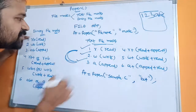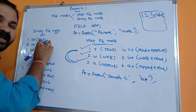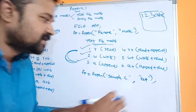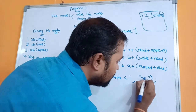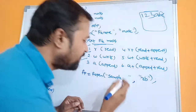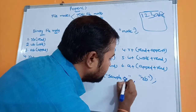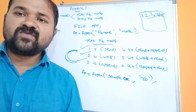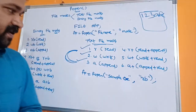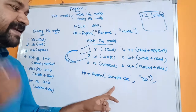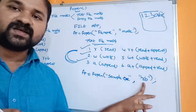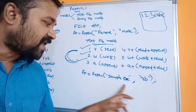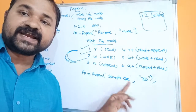rb mode is similar to the read mode. This mode opens a binary file for reading. A good example of a binary file is an .exe executable file, which is in the form of zeros and ones. With rb mode we can read data from a binary file. If the file doesn't exist, fopen returns NULL to the file pointer.